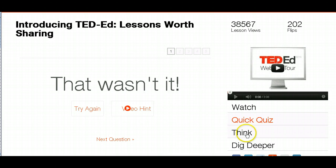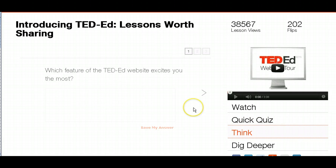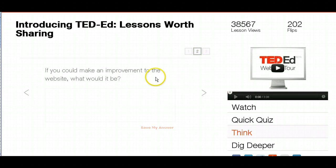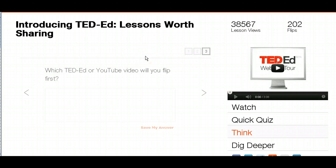Once you complete the quick quiz, you can go to the 'Think' portion. This is the higher-level thinking piece — for example, 'Which feature of the TED Ed website excites you the most?' This gives students a chance to put in their own thoughts and make it authentic. As a teacher, this is where you would write those authentic questions that would really help a student think more deeply. You can write better questions than the sample ones provided.